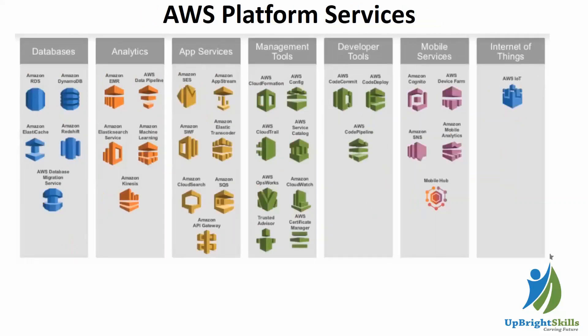AWS platform services are ready-made services where you don't have to worry about the platform — you just select those services and start immediately deploying your code. For databases there are services like Amazon RDS, Amazon DynamoDB, Amazon ElastiCache, Amazon Redshift, and Amazon Database Migration Service. There are also different platform services for analytics, applications, management tools, developer tools, mobile services, and Internet of Things. You can use a combination of any of these to build your own architecture.